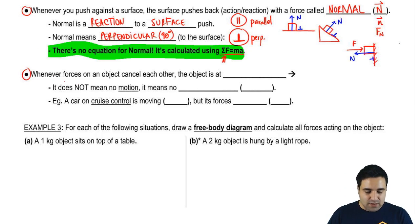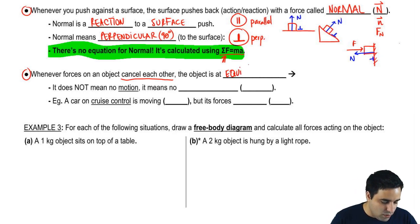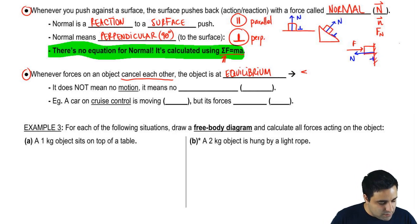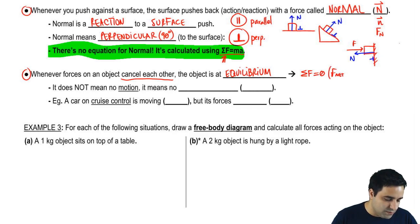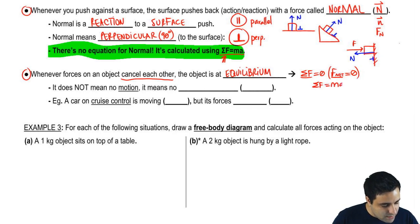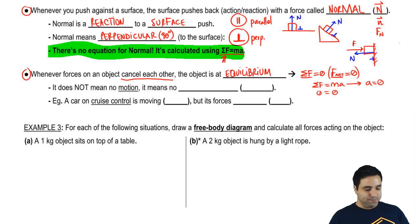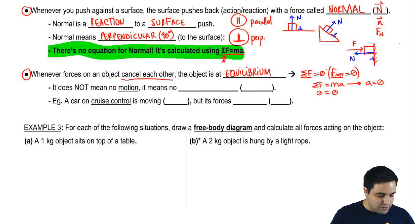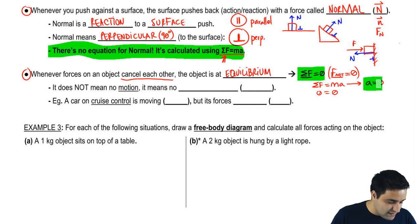Whenever forces on an object cancel each other, the object is at a state called equilibrium. Equilibrium means the sum of all forces equals zero — the net force equals zero. If the sum of all forces equals ma, and all forces equal zero, then the acceleration is also zero. So equilibrium means forces cancel, sum of forces equals zero, and acceleration is zero.